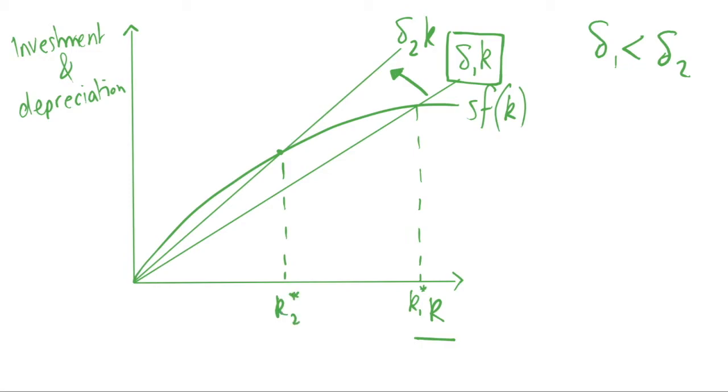If you remember, our steady state is given when investment, which is sf(k), is equal to depreciation. So originally this was equal to sigma 1k, but our depreciation has increased, so we have a new steady state. Our steady state moves down, steady state decreases.